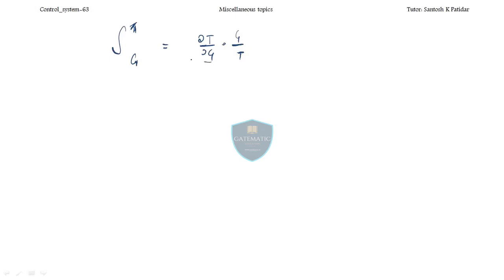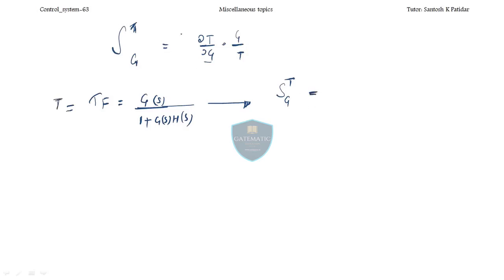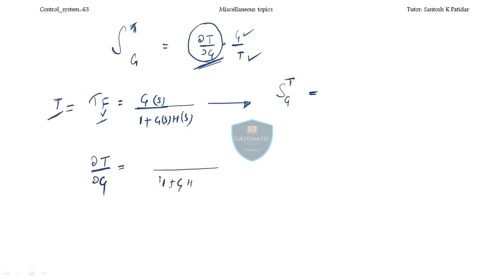Now we will calculate sensitivity for the closed-loop transfer function T = G(S) / (1 + G(S)H(S)). First, sensitivity with respect to G. Using the formula, we need to differentiate T with respect to G. Differentiating the numerator and denominator using the quotient rule, we get: in the numerator, (1 + GH) × 1 minus G × H, all over (1 + GH) squared.